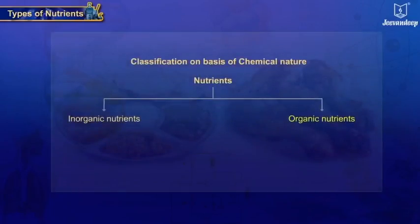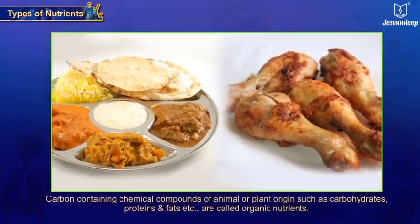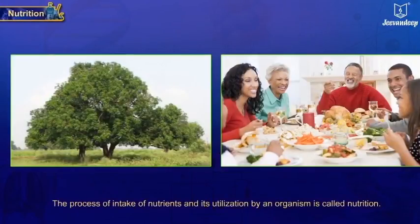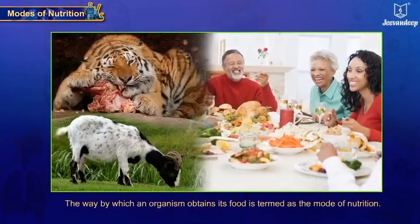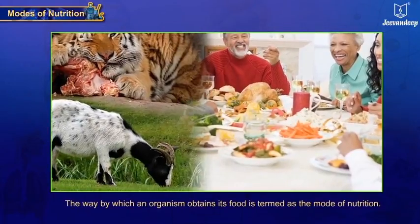Two: organic nutrients. Carbon-containing chemical compounds of animal or plant origin, such as carbohydrates, proteins, and fats, are called organic nutrients. Nutrition is the process of intake of nutrients and its utilization by an organism. The way by which an organism obtains its food is termed as the mode of nutrition.